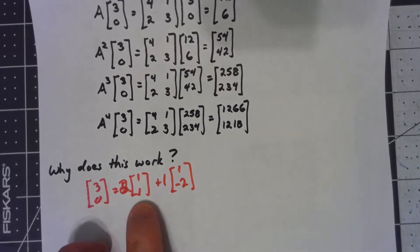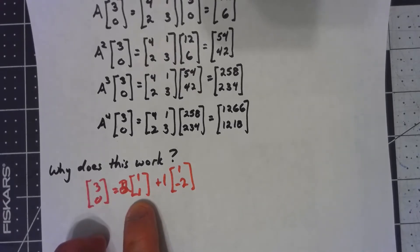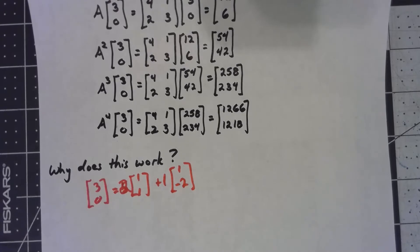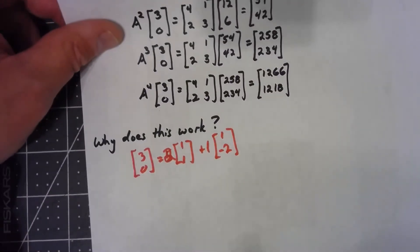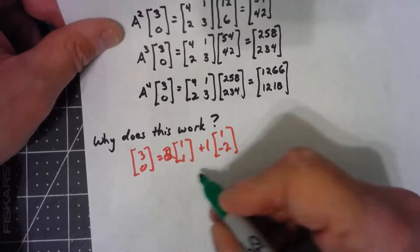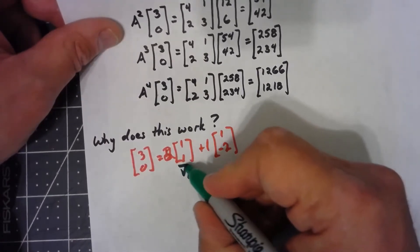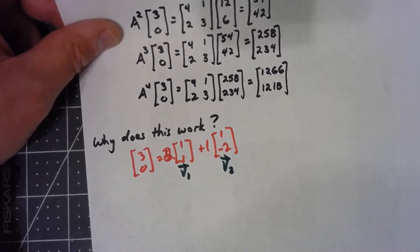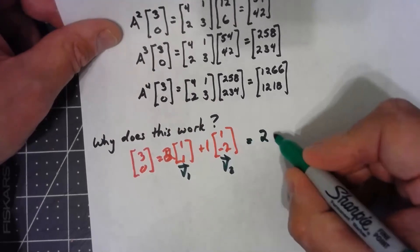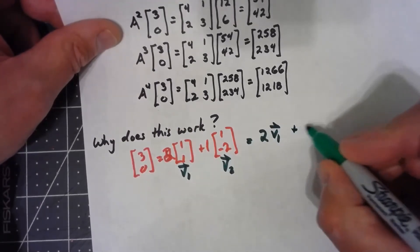Why is this way of writing it important? Well, the [1, 1] is the eigenvector for the eigenvalue 5, and [1, -2] is the eigenvector for the eigenvalue 2. We didn't actually find that in the last video, but it's easy enough to do. So let's go ahead and call these things v1 and v2. This thing is equal to 2v1 plus v2.